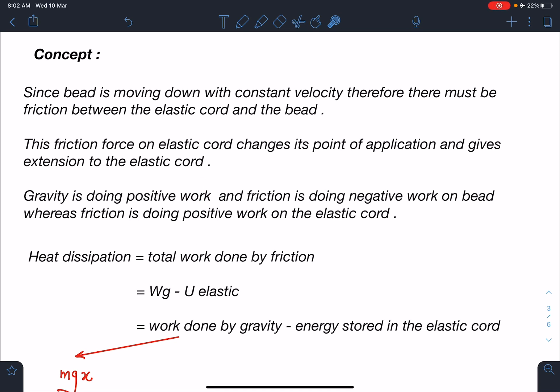Gravity is doing positive work and friction is doing negative work on the bead, whereas friction is doing positive work on the elastic cord. Overall, net work done by friction force is negative and we can say heat dissipation is nothing but the total work done by friction.